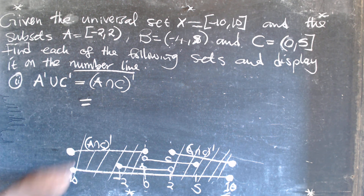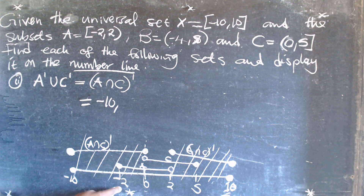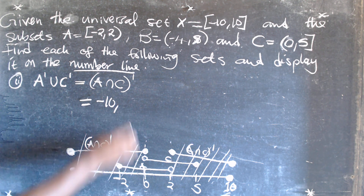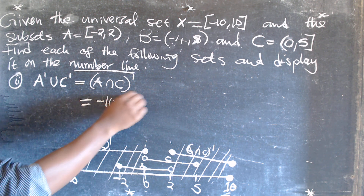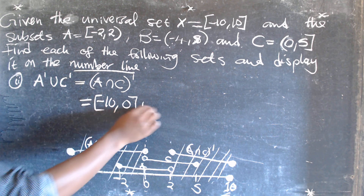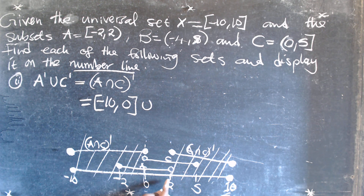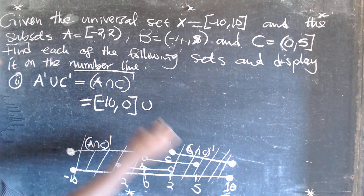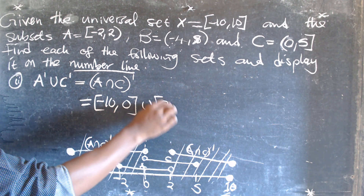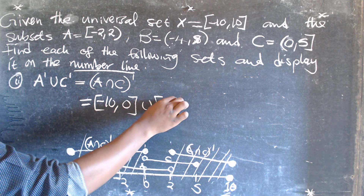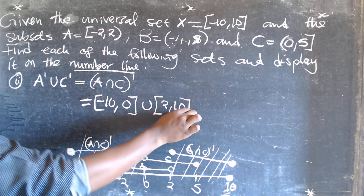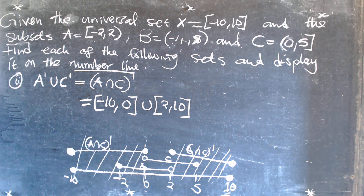This is equal to: from negative 10 to 0, where both numbers are part of the set, union from 2 to 10, where both numbers are part of the set. That's why we're using the closed brackets. That's the way you're supposed to do this question.